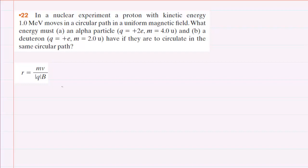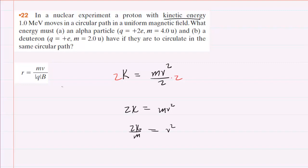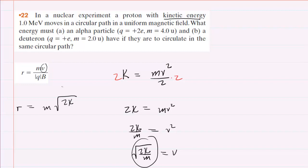It's going to be important to incorporate the kinetic energy into this equation. We recall from Physics 1 that the kinetic energy of a particle is the mass times the speed squared divided by 2. We'll solve this for velocity by multiplying both sides by 2, giving us 2K = mv². Dividing by m and taking the square root gives us v = √(2K/m). We'll substitute this in for v, so now we have mass times √(2K/m) divided by qB.